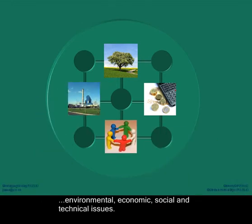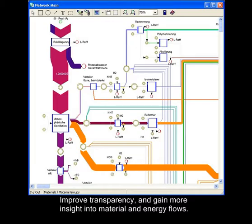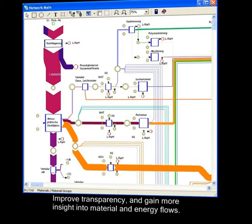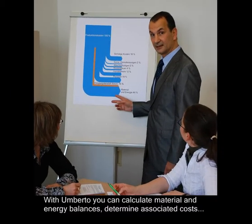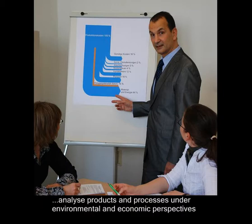Improve transparency and gain more insight into material and energy flows. With Umberto you calculate material and energy balances, determine the associated costs and analyze your products and processes under environmental and economic perspectives.